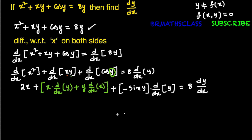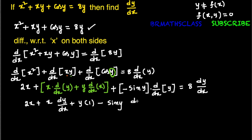Simplifying further: 2x plus x · dy/dx plus y · (derivative of x with respect to x is 1) minus sin y · dy/dx equals 8 · dy/dx. We are following a particular procedure to find dy/dx from an implicit function. First, identify it as an implicit function. Then differentiate the complete equation with respect to x on both sides. Once differentiation is complete, collect all dy/dx terms on one side.